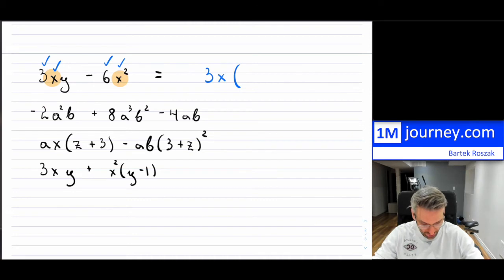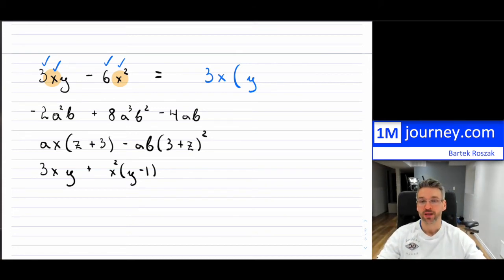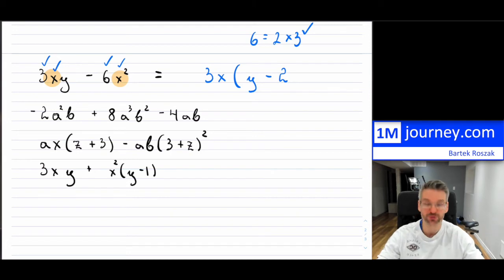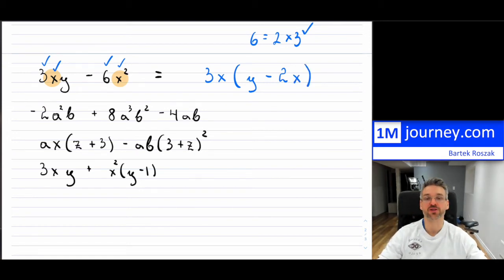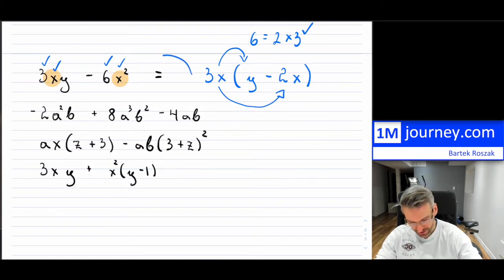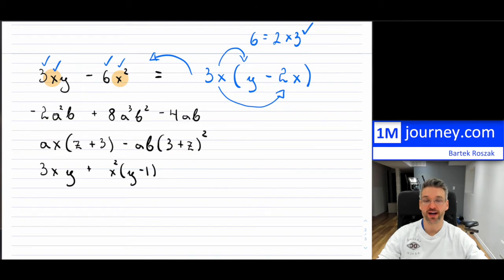What is remaining? In the first term, I took out the 3 and the x, so only y remains. In the second term, I took 3 out of 6, so 2 remains because 6 equals 2 times 3. I took one x out of x squared, so one x still remains. Therefore the factored form is 3x times the quantity (y minus 2x). This is a binomial because it has two terms. You can check by distributing 3x into y and 3x into 2x — you will get exactly what you started with. The greatest common factor for these two terms was 3x — that is the biggest thing I could take out.